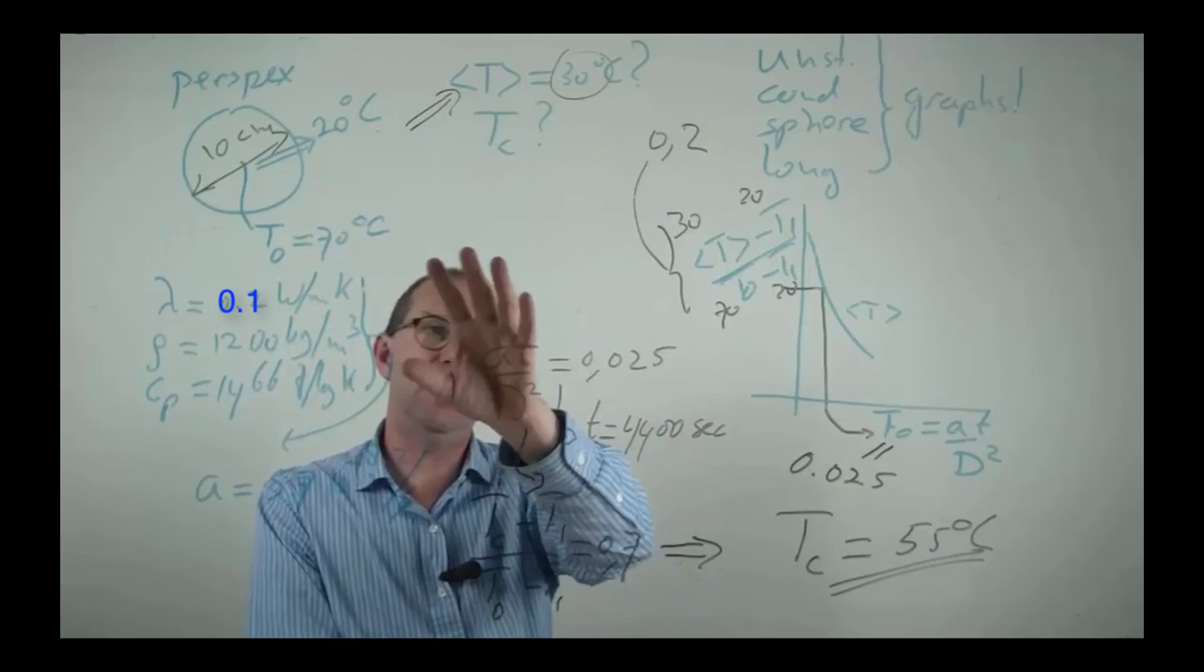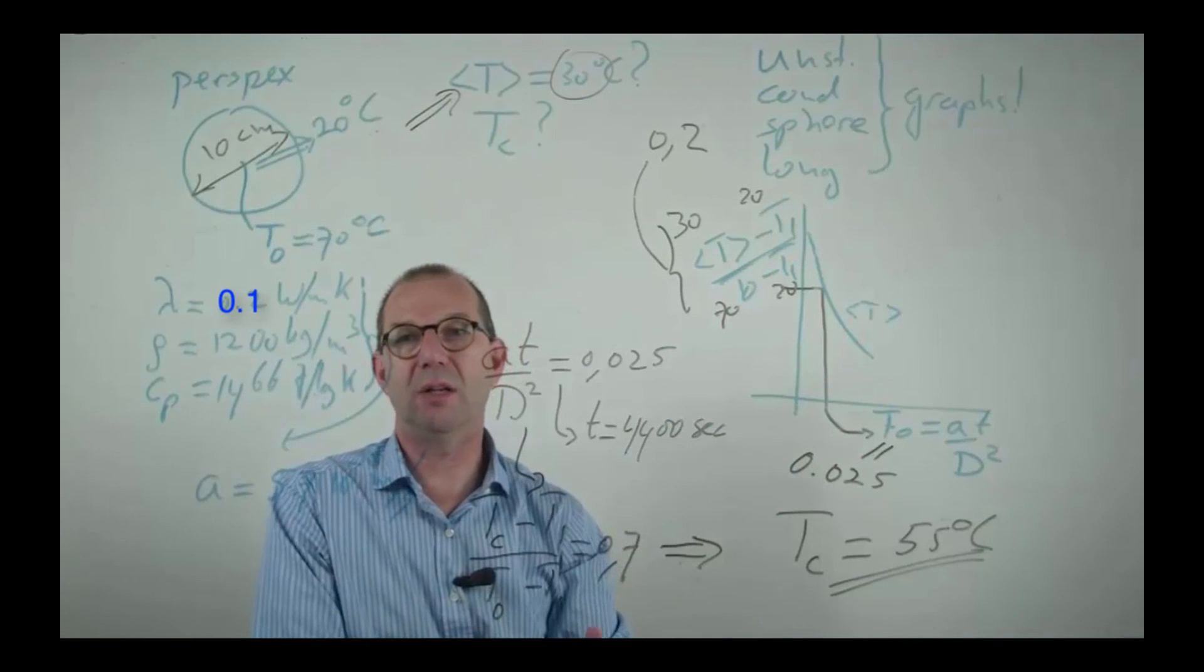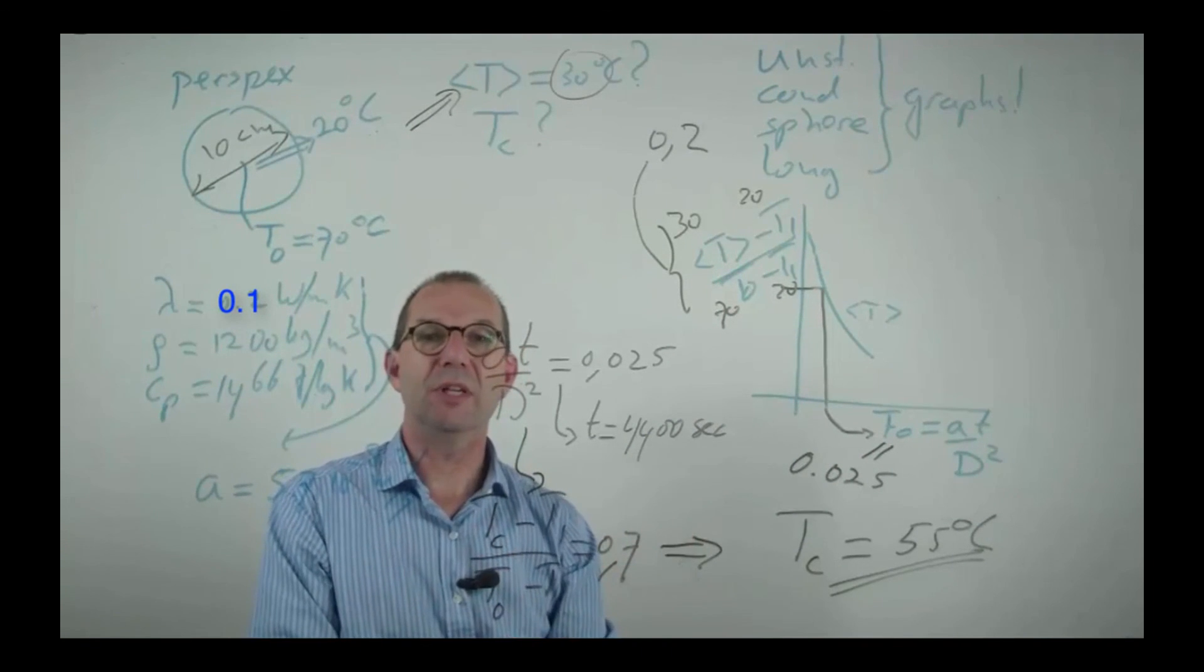This shows you, with a simple example of cooling down a spherical object, how you can use our unsteady long term graphs. See you at the next one.